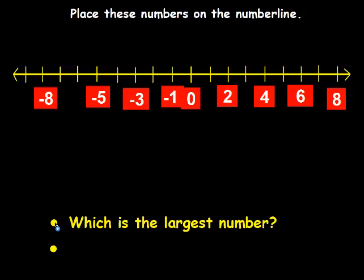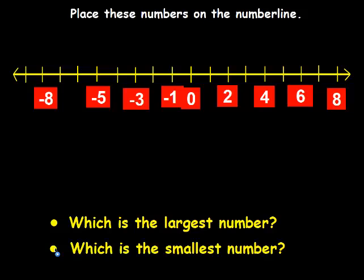Which is the largest number? The largest number on that number line is the one farthest to the right — that is positive 8. And which is the smallest number? It's the number farthest to the left — that would be negative 8.